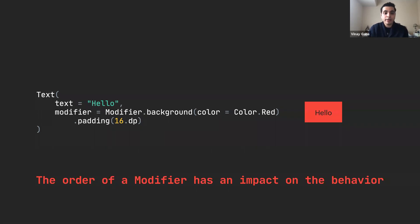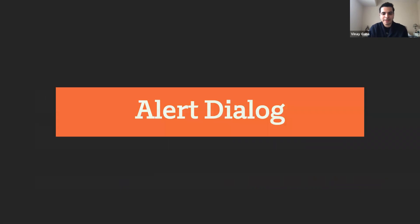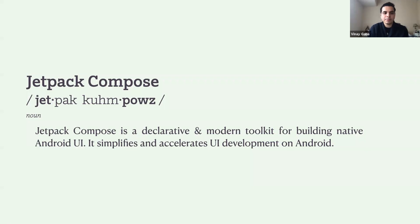The next example is an alert dialog. This might sound strange — what's special about an alert dialog? This is actually a very special example because it's probably the first time a lot of people have their 'aha moment' when it comes to declarative UI. When we look at the definition of Compose, it says it's a declarative and modern toolkit for building native Android UI. But what does being declarative even mean? It sounds like a buzzword, and we need to understand what it actually means.